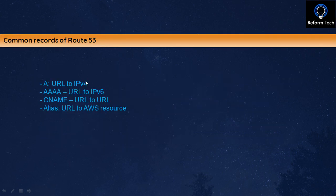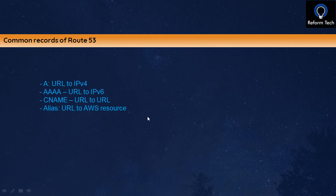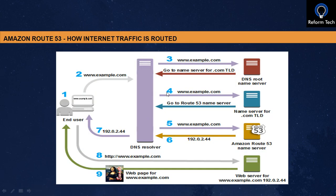In Route 53 you have common record types: A, AAAA (Quad-A), CNAME, and Alias. The A record translates a URL to an IPv4 address. The AAAA record does the same but for IPv6 addresses. The CNAME translates a URL to another URL. And the Alias record translates a URL to an AWS resource.